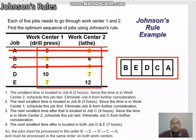We have completed the sequence: B, E, D, C, A. The jobs must be processed in the order B, E, D, C, A and must be processed in the same order on both work centers.